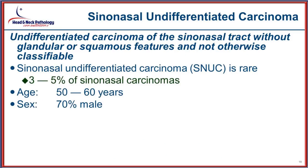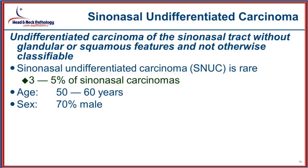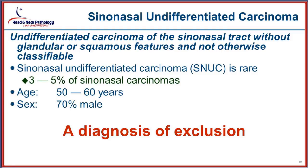Sinonasal undifferentiated carcinoma (SNUC) is a fairly uncommon tumor, accounting for only about 3–5% of tumors, because it is essentially a diagnosis of exclusion — you have excluded glandular differentiation and squamous differentiation. As a category it is shrinking with each passing decade, as cases are being reclassified into other categories. It occurs in the middle decades of life with a strong male predilection, similar to poorly differentiated non-keratinizing SCC. Histologically it shows sheets and lobules, moderately cellular, large cells with variable cytoplasm, well-defined cell borders, limited pleomorphism, very high NC ratio, hyperchromatic to vesicular open nuclear chromatin, and usually prominent nucleoli.